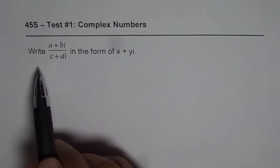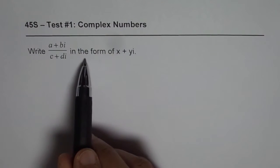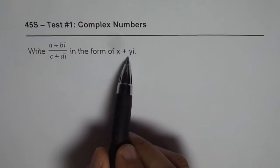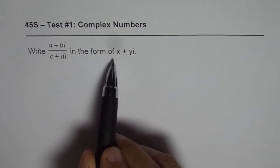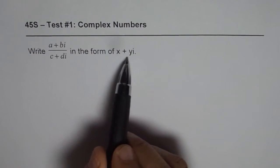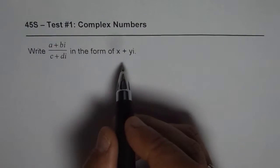So we have a question here: write a plus bi over c plus di in the form of x plus yi. You will notice that in x plus yi denominator is 1. So we do not really want a denominator or complex number here in the denominator. We want to eliminate the complex part of the complex number. That is what we are trying to do.